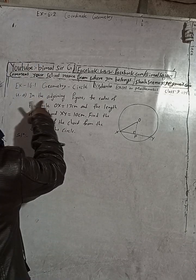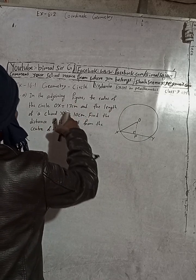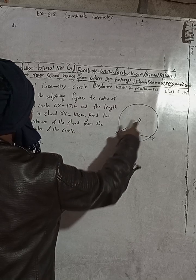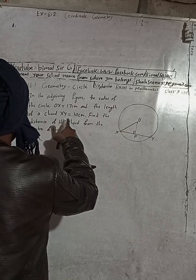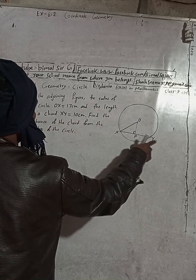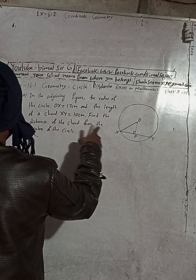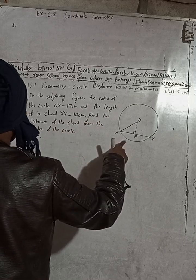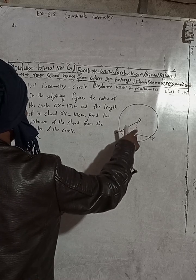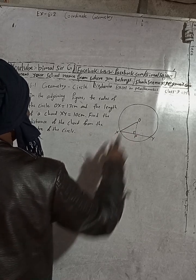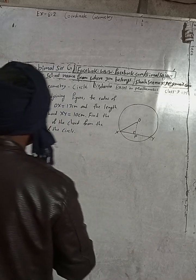Here the question is 4A. In the adjoining figure, the radius of the circle OX is 13 cm, and the length of the chord XY is 10 cm. We have to find the distance of the chord from the center of the circle — that means we have to find OP, the distance from the center to the chord.